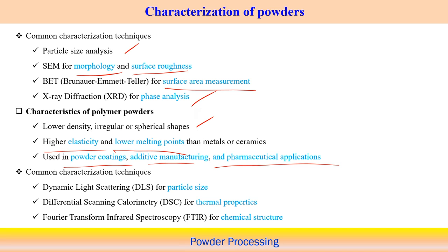Characterization techniques for polymer powder include: dynamic light scattering to measure particle size; differential scanning calorimetry (DSC) to evaluate thermal properties; and Fourier transform infrared spectroscopy (FTIR) to understand the chemical structure of the polymer powder. For all three — metals, ceramics, and polymers — we understand the typical behavior, shape, and properties and measure them using different instruments and methodologies.